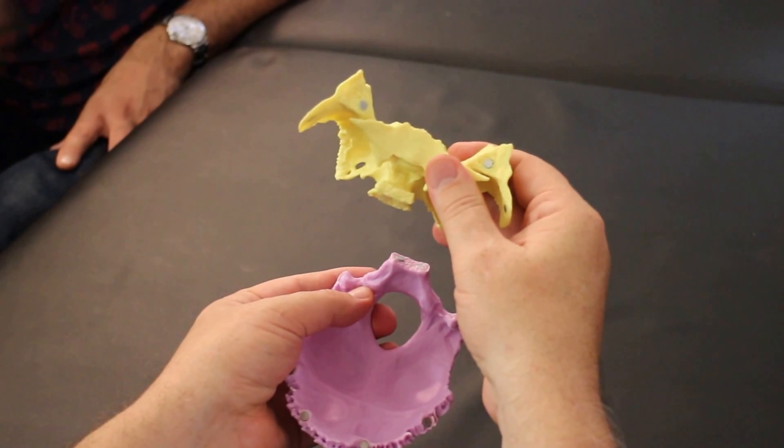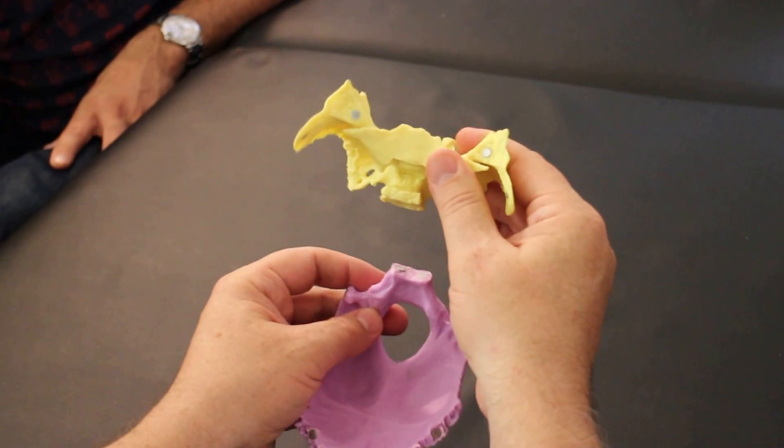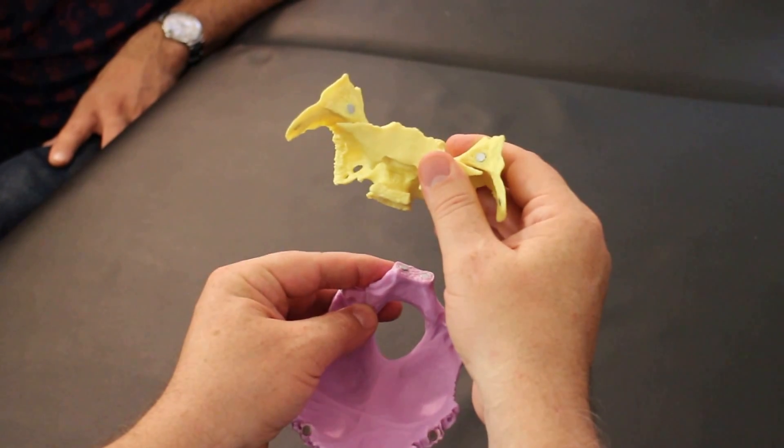This is left lateral strain, or left lateral shear, and it's named for where the base of the sphenoid has gone relative to the base of the occiput that's gone to the left.